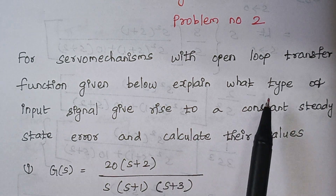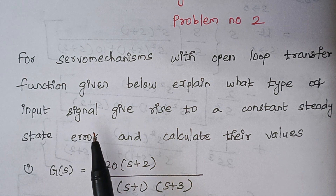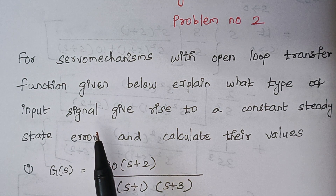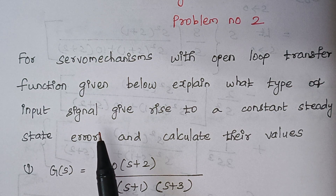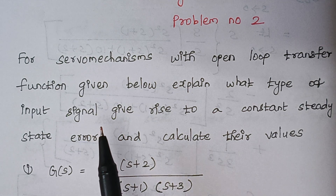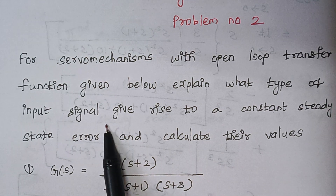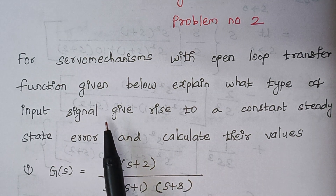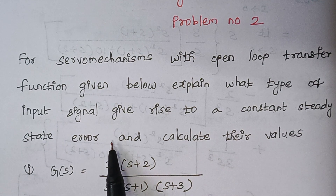We should find what type of input signal we need to give. The different types of input signals we know are: step signal, ramp signal, parabolic signal, and impulse signal. We have to find what type of input signal to give to the particular given system to produce a steady state error.